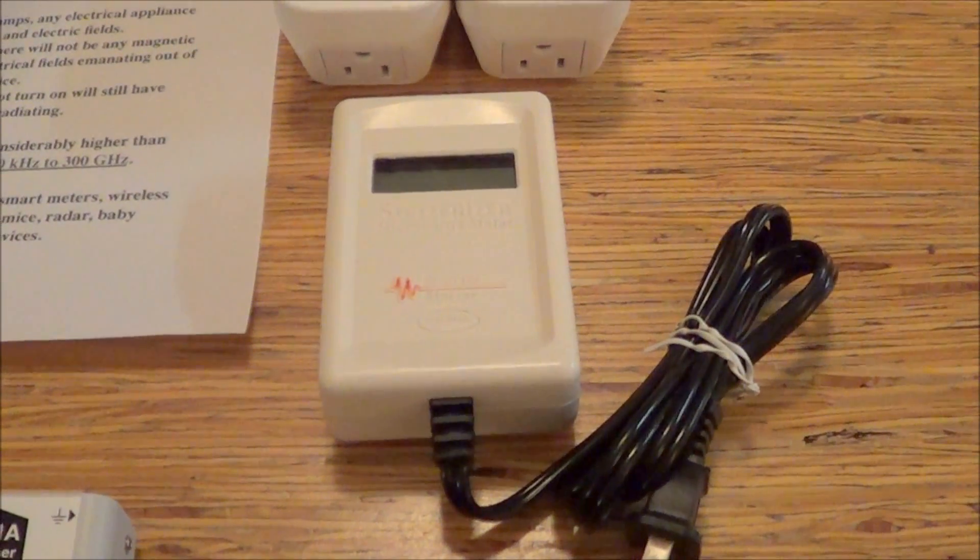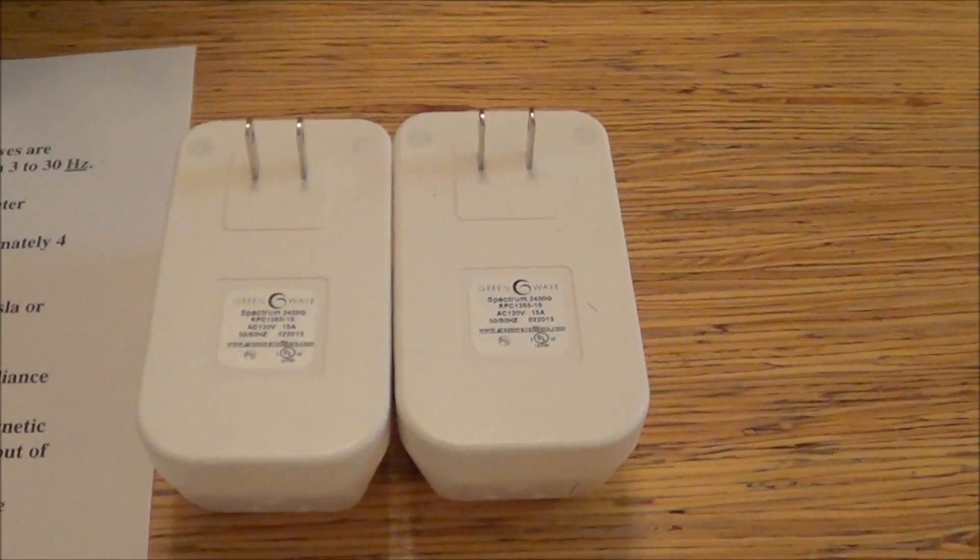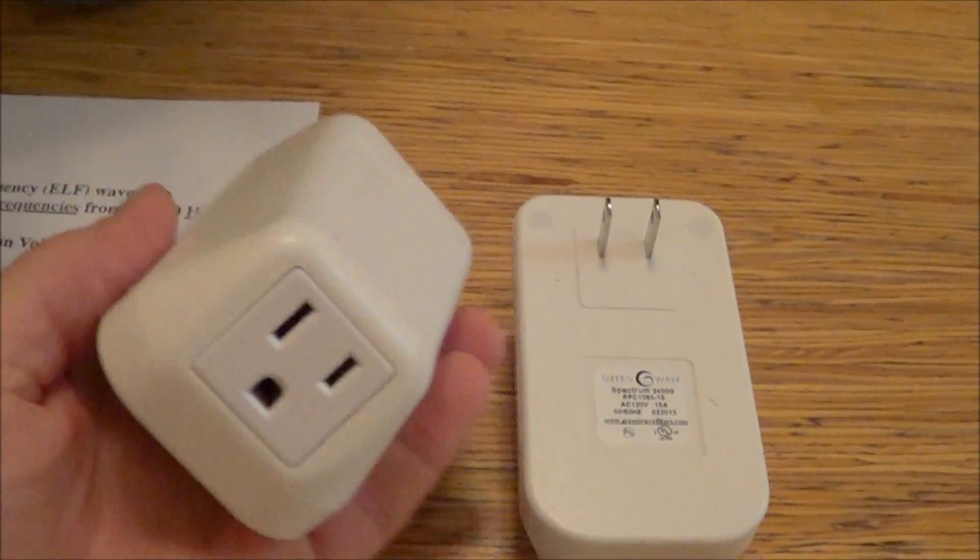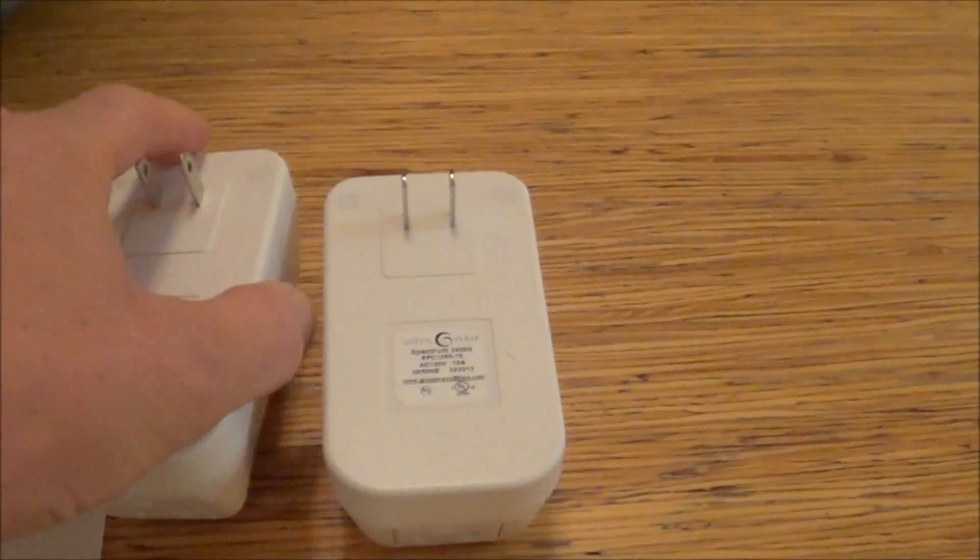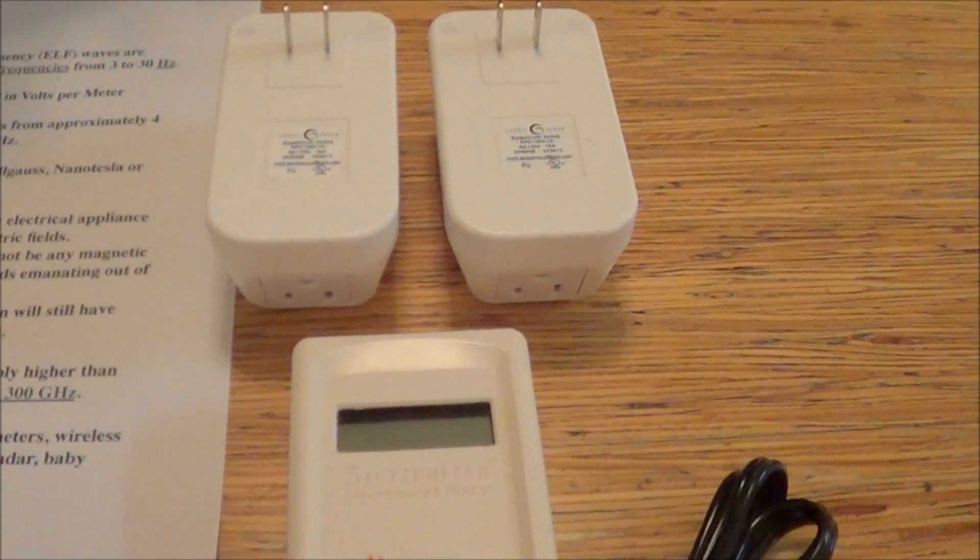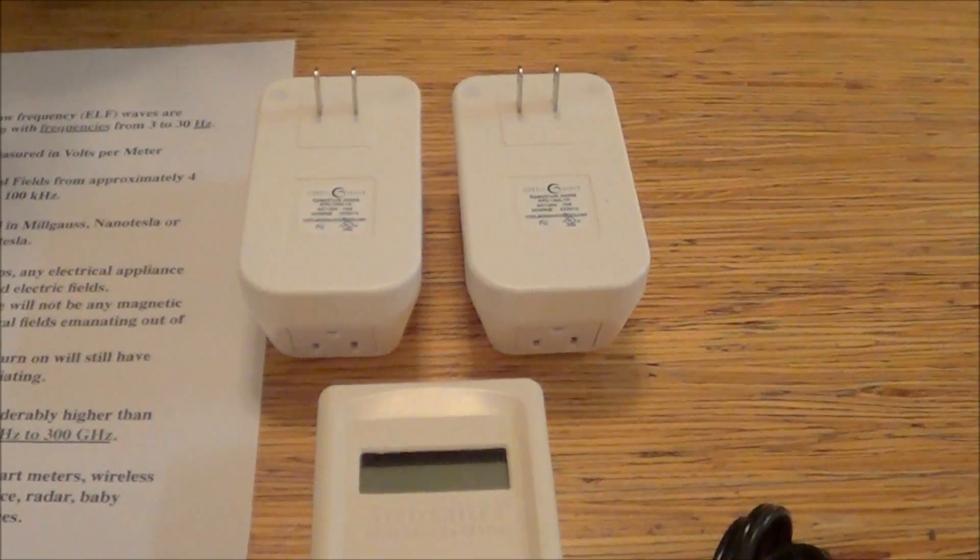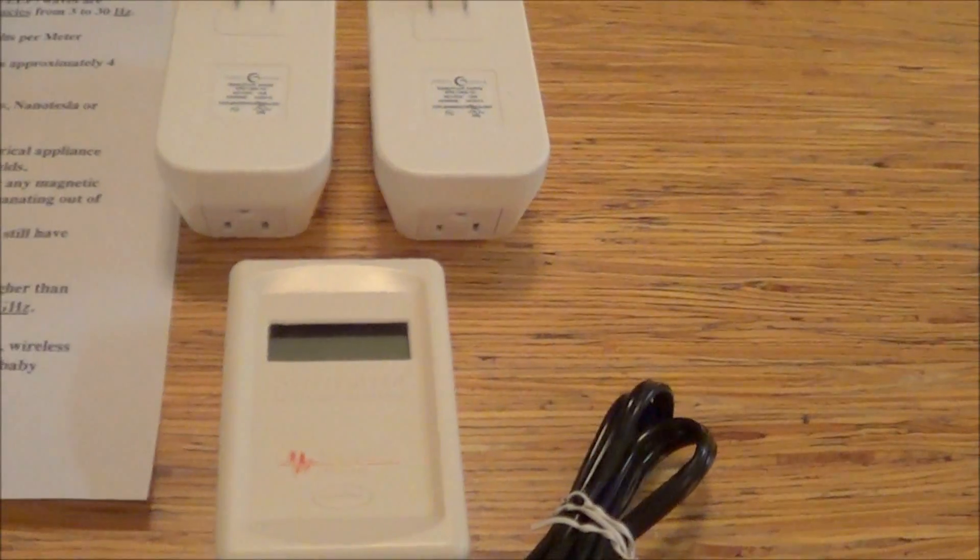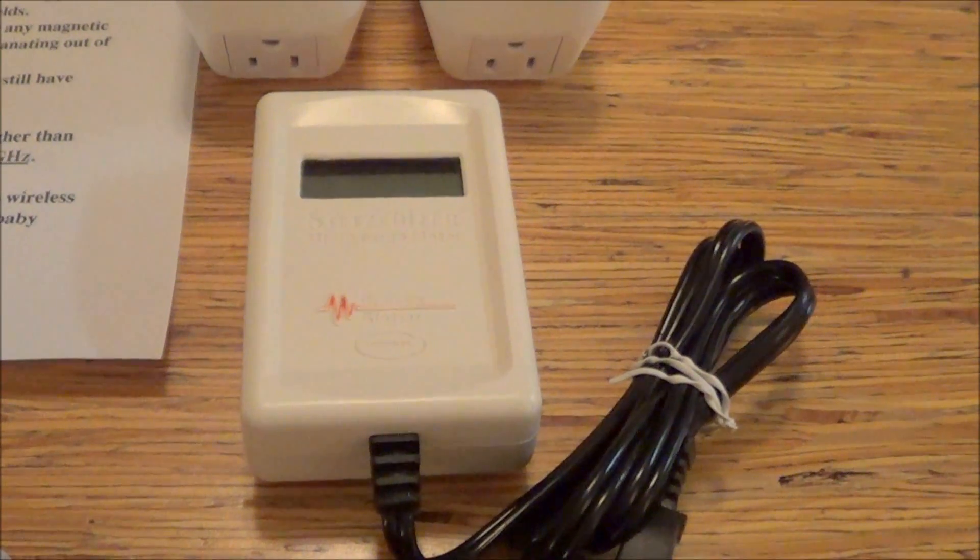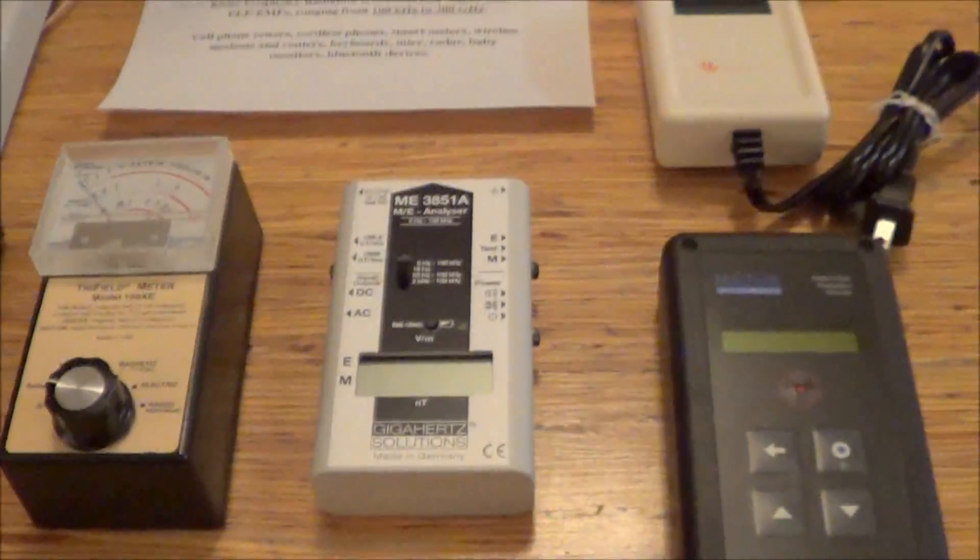And when people want to remediate the dirty electricity, they can use microsurge filters, such as this. These are GreenWave microsurge filters, excellent filters for installing around your home or office. Or one can also use the stetsorizer microsurge filters. So, once again, the stetsorizer meter is for measuring high-frequency transients or dirty electricity. I'm going to go over this again.